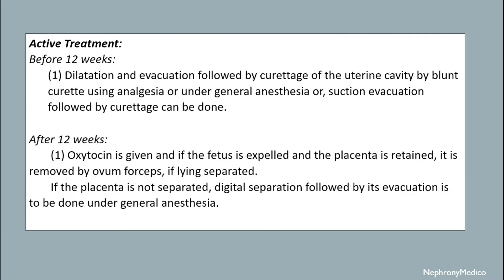Active treatment. Before 12 weeks, dilatation and evacuation followed by curettage of the uterine cavity by blunt curette using analgesia or under general anesthesia, or suction evacuation followed by curettage can be done. After 12 weeks, oxytocin is given and if the fetus is expelled and the placenta is separated, it is removed by ovum forceps if lying separated. If the placenta is not separated, manual separation followed by its evacuation is to be done under general anesthesia.